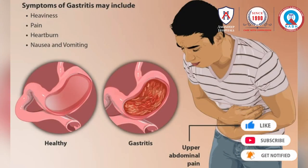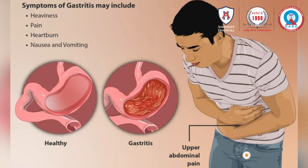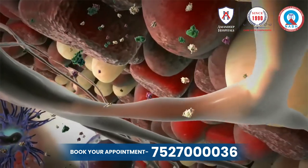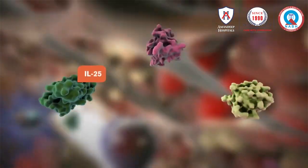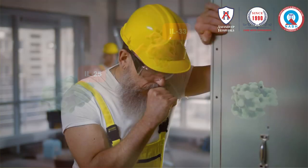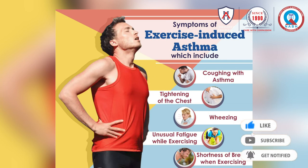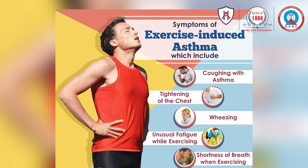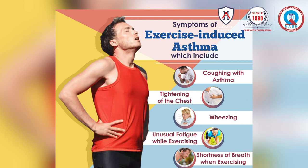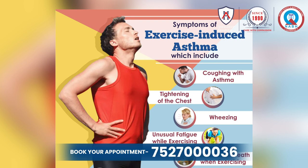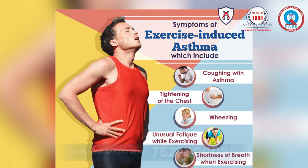Many patients have problems with asthma and airways. There are multiple types of asthma: eosinophilic asthma, which responds well to steroids; neutrophilic asthma; occupational asthma; and exercise-induced asthma. Patients in the gym and others experience a lot of trouble due to airway constrictions.